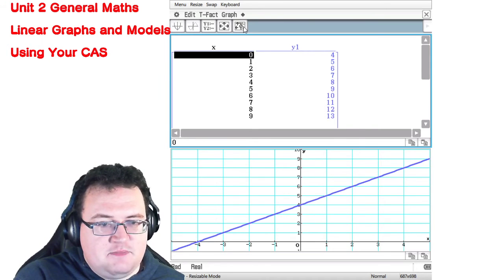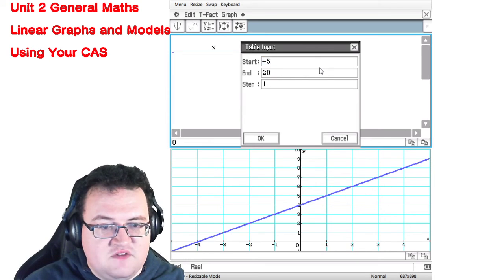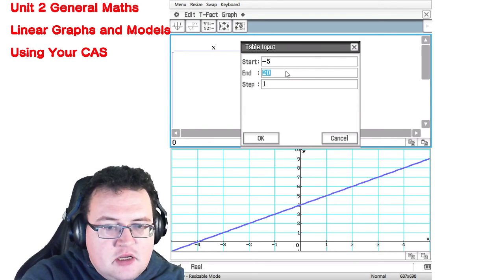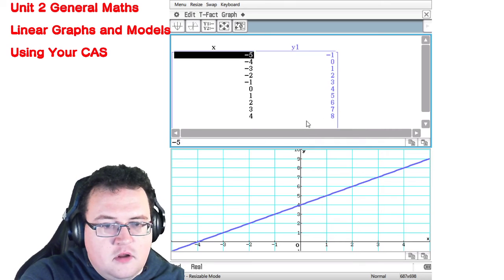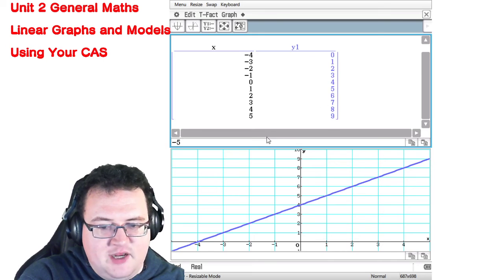So if I press this button here, it says table input. I'm going to start at minus 5. I'm going to end at 5. And now it gives me the answers that I need. So minus 5 all the way down to 5, and I have my table of values.